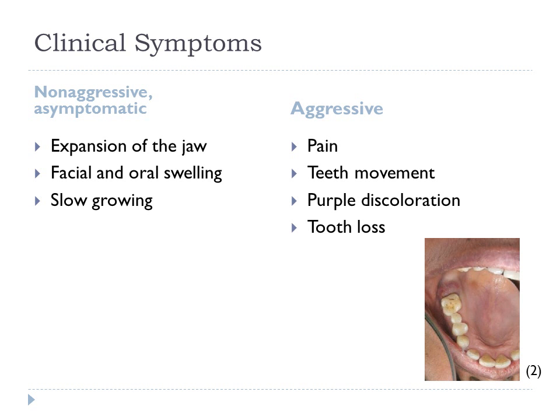The clinical symptoms of Central Giant Cell Granuloma can be found in two forms: non-aggressive asymptomatic forms and aggressive forms. Most individuals are asymptomatic and usually appear with expansion of either jaw — the maxillary or the mandibular — depending on the location of the lesion, causing facial and oral swelling. These lesions are slow growing and do not cause cortical bone perforation.